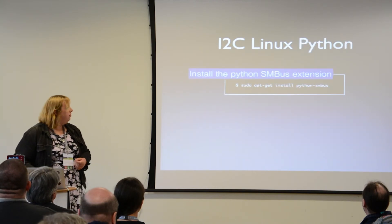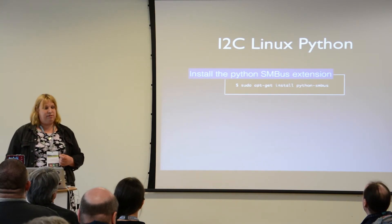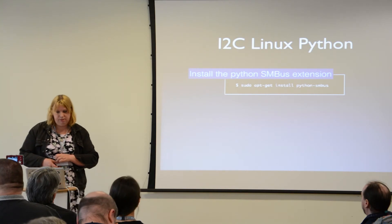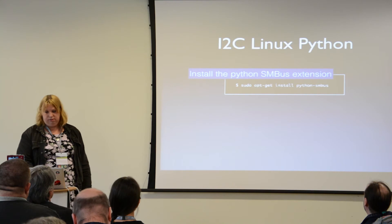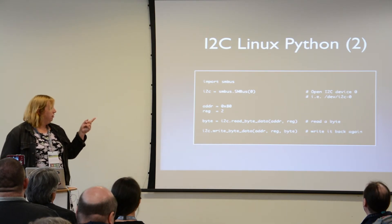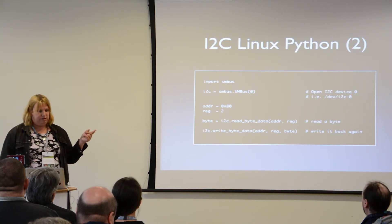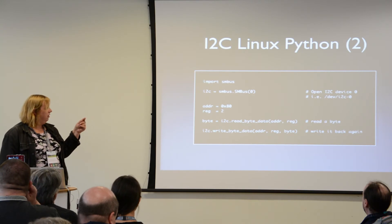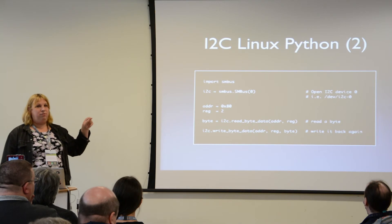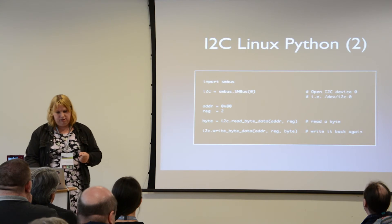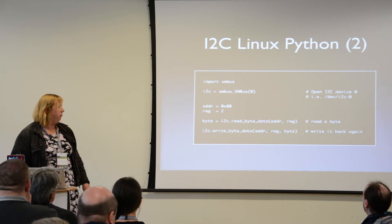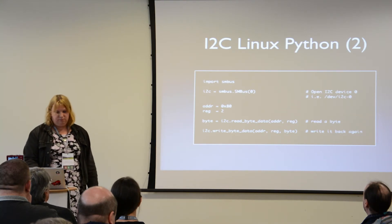For Python I2C, unlike the SPI one, you don't actually have to build anything. The SMBus I2C bus extension is available as a package — just apt-get install it. You import it and open it. Unlike the SPI one, the style is slightly different: there's a factory method that returns the device when you request it. For reading and writing data, there are a bunch of APIs, but the typical ones just read or write data back — those are the obvious APIs.